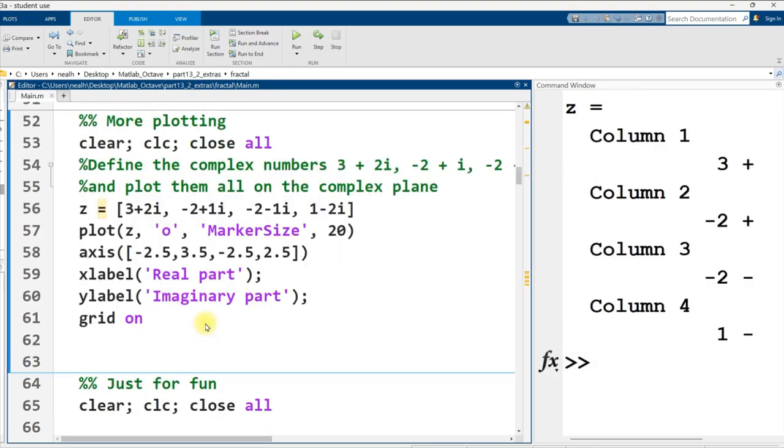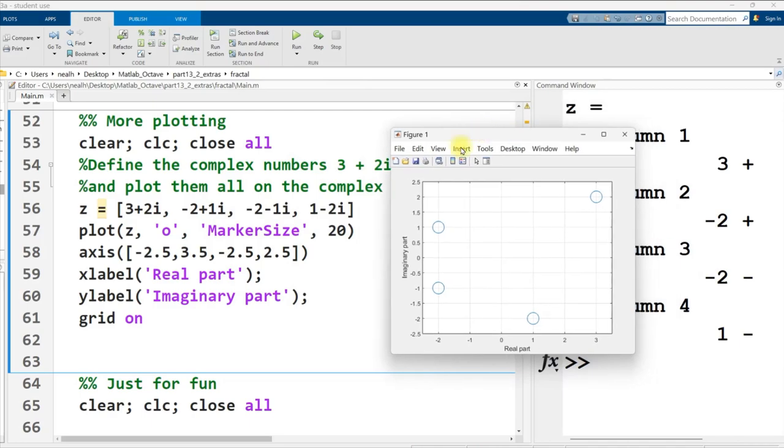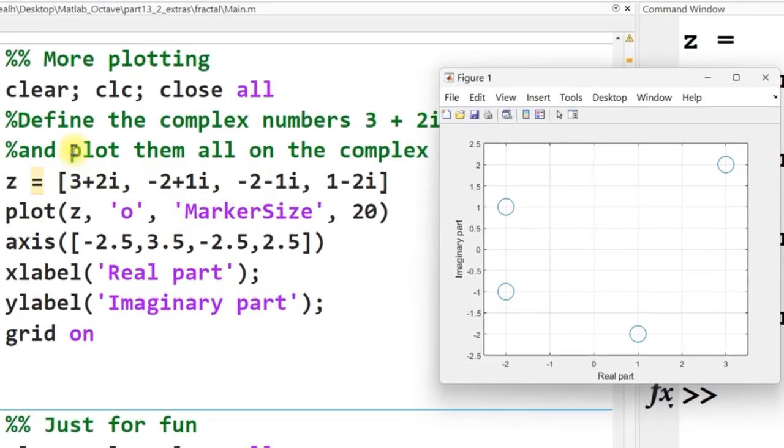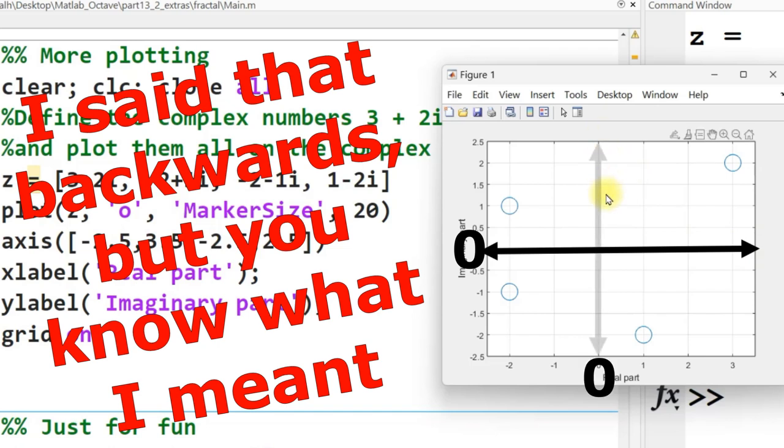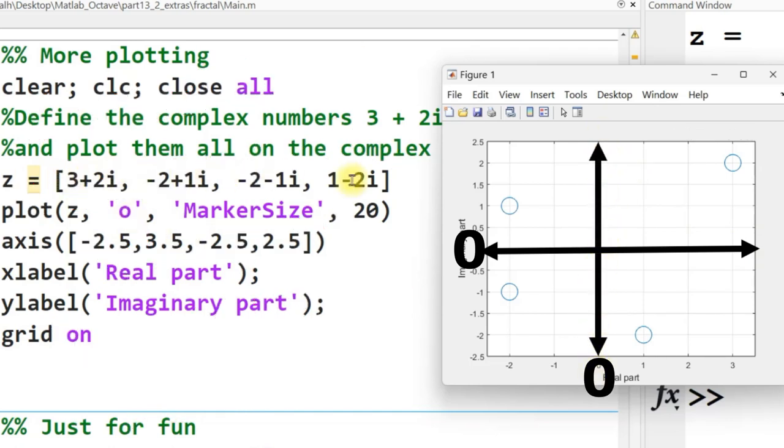Here's a little bit more plotting, just to reemphasize my point here. So I've got a vector z of four complex numbers: 3 plus 2i, negative 2 plus 1i, negative 2 minus 1i, and 1 minus 2i. When I plot z as a vector with circles, here are the points that show up. All four of these numbers can be located with their two components. We go left 2, down 1, and there it is right there.